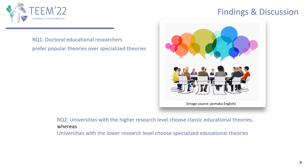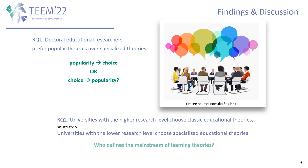In conclusion, we have two main findings in this study. First, doctoral education researchers prefer popular theories over specialized theories. Secondly, universities with a higher research level choose classic educational theories, whereas universities with a lower research level choose specialized educational theories. These findings raise the discussion that popularity influences theory choice, or oppositely, theory choice in doctoral dissertations accounts for the prevalence of some learning theories in the academic community of practice. With respect to RQ2, who defines the mainstream of learning theories? Popular learning theories are more used in doctoral dissertations, so it might be the top universities that define the mainstream.